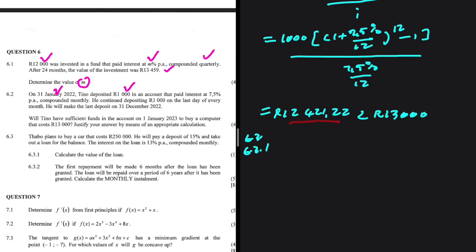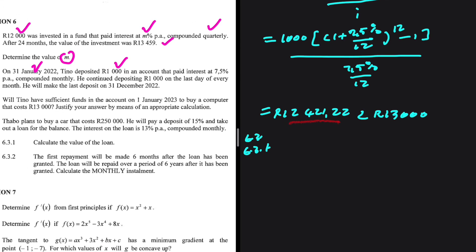6.3.1: Tower plans to buy a car that costs 250,000. He will pay a deposit of 15% and take out a loan for the balance. The interest on the loan is 13% per annum compounded monthly. Let's calculate the value of the loan.